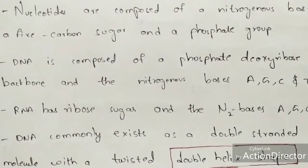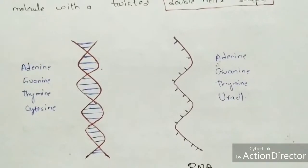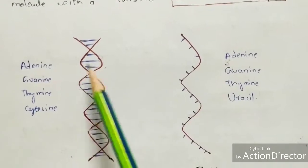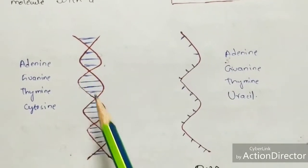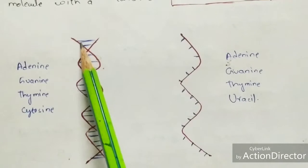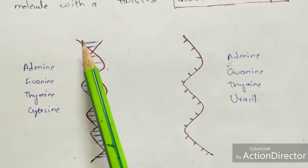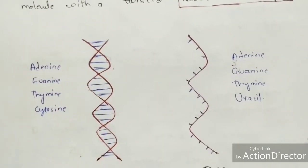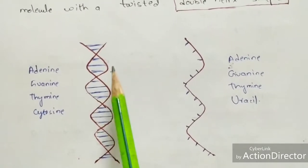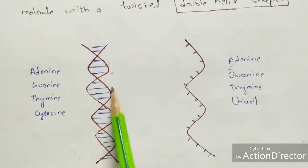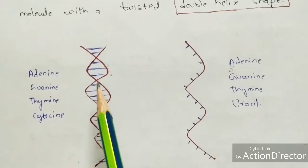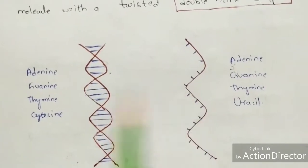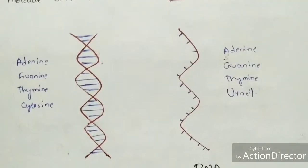DNA commonly exists as a double-stranded molecule with a twisted double helix shape. The nucleotides are twisted together forming this double helix structure, and each nucleotide is linked with phosphodiester bonds. The structure of DNA and RNA has also been explained separately — the link will be in the description box.